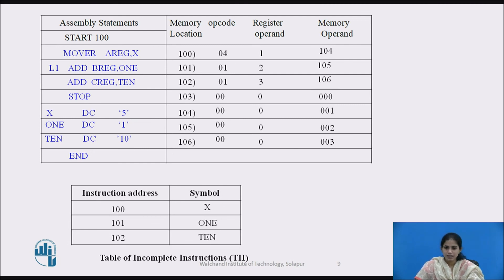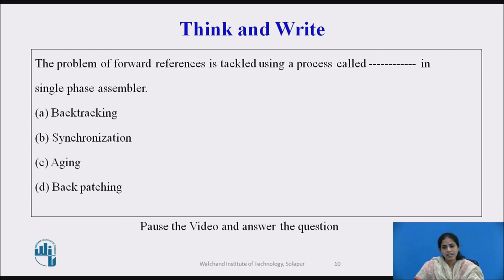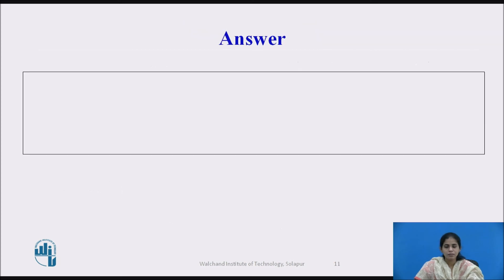Now a quiz question: the problem of forward reference is tackled using which process in a single-phase assembler? The options are: backtracking, synchronization, aging, and backpatching. Pause the video and think about it. The answer is: we use the backpatching process to solve the forward reference of a symbol in a one-pass assembler.